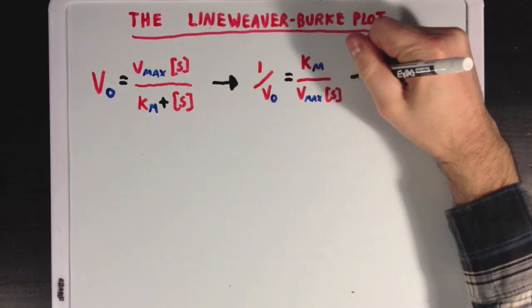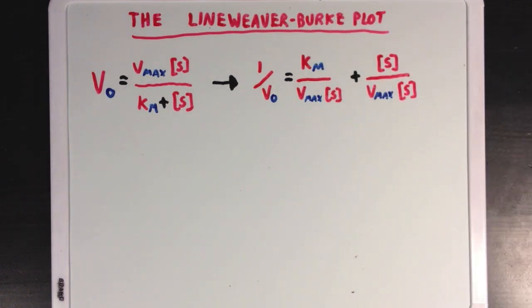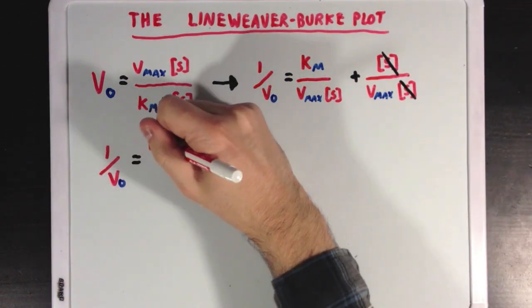And that'll leave us with 1 over Vo is equal to Km over Vmax times S, plus S over Vmax times S, since I've separated those two terms. Now, if we cancel out the two S values, then we're left with the equation that I've just drawn out.